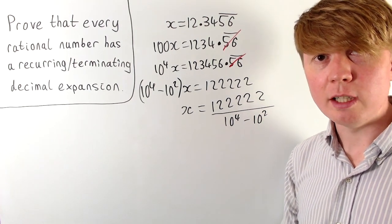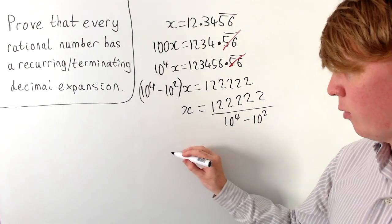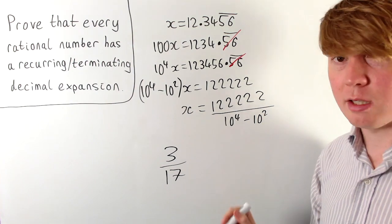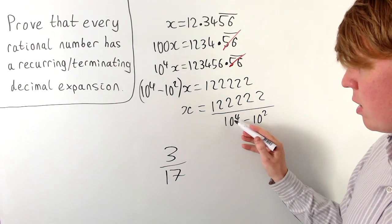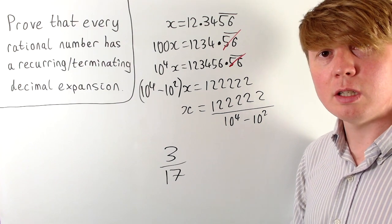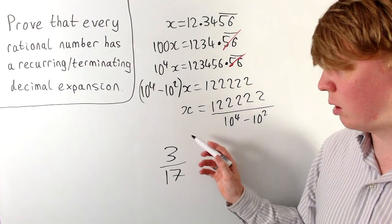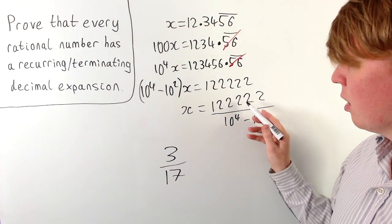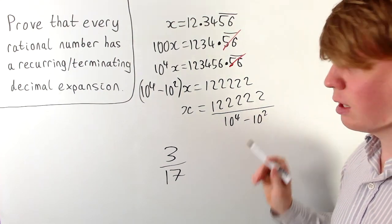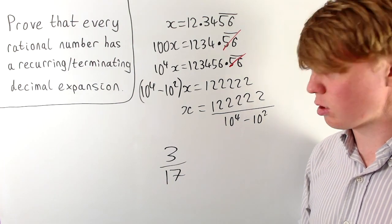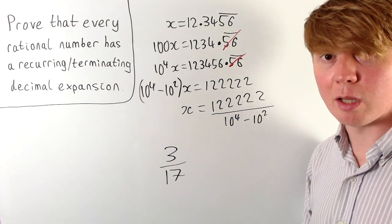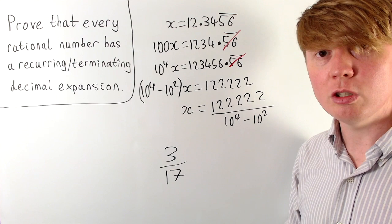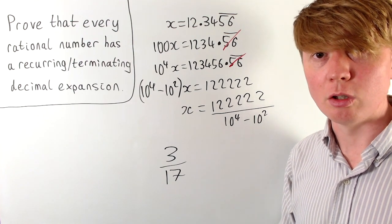But what isn't particularly obvious is, let's say we take any fraction like 3 over 17 — why should we be able to express this in a form where the denominator is a difference of powers of 10? Because with our recurring decimal expansion, you'll always be able to express this as a fraction where the denominator is a difference of powers of 10. It's not obvious just looking at any fraction that we should be able to do this by multiplying our numerator and denominator by the same integer. We'll answer this question along the way in our proof.